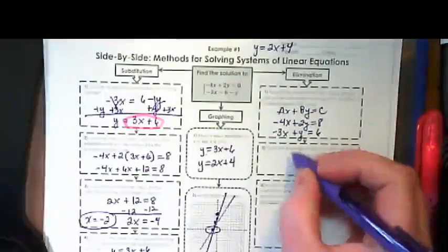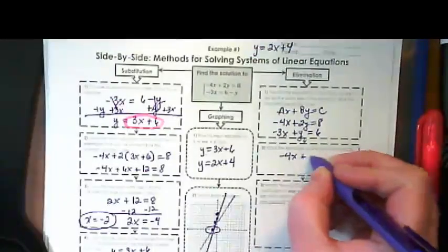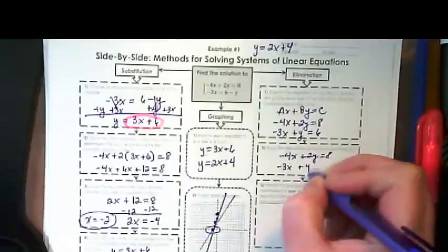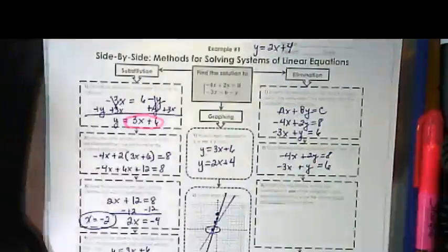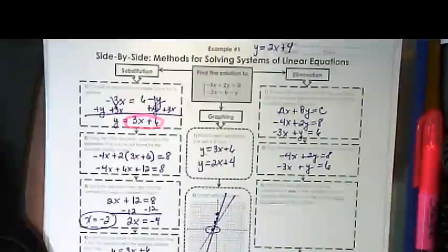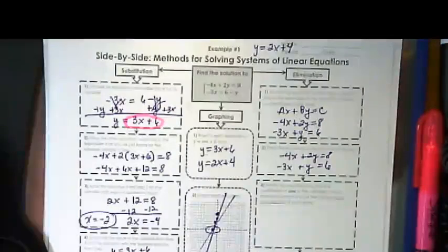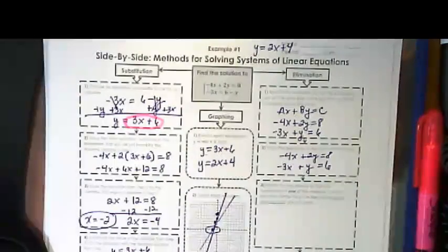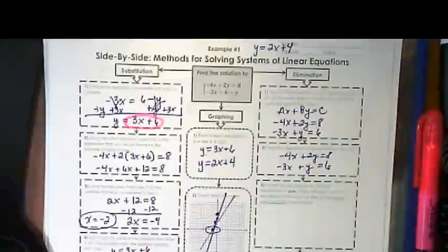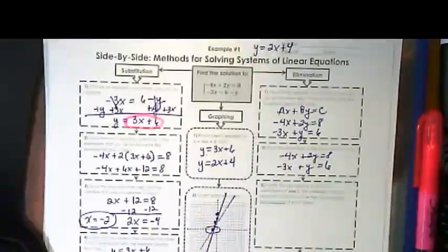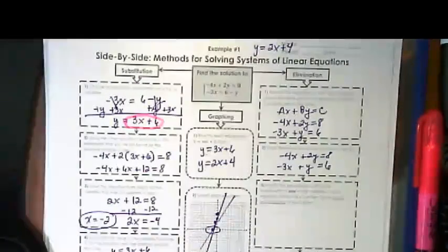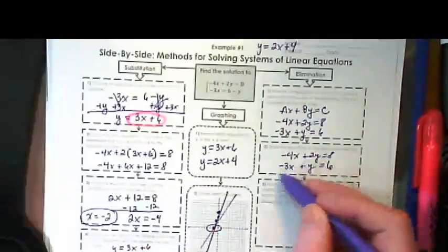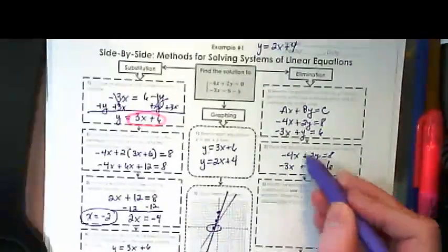The second one is to stack them up so that like terms are above each other. We're going to modify one of the equations so that we get coefficients that will eliminate themselves or zero out. I'm going to take the second equation and multiply it times negative 2 so we can get rid of the y term.